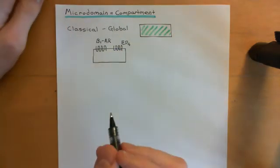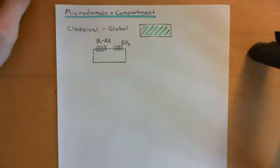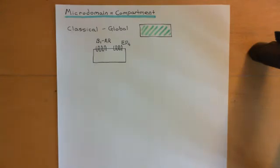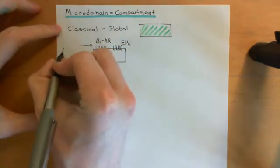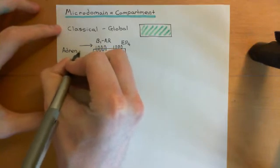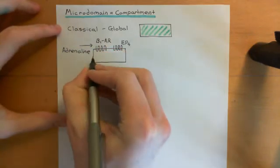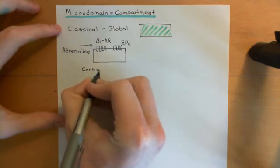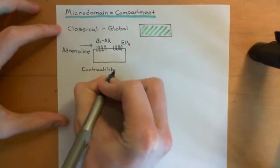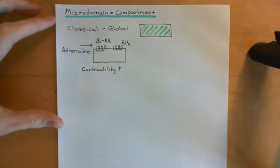I'm talking about a normal cardiomyocyte — say from the ventricle — that is capable of contraction, rather than a sinoatrial node cardiomyocyte. If you stimulate the beta-1 adrenergic receptor with adrenaline, you'll get a cyclic AMP signal being generated, and what this results in is the cardiomyocyte contracting with increased force.